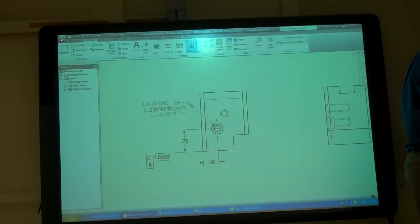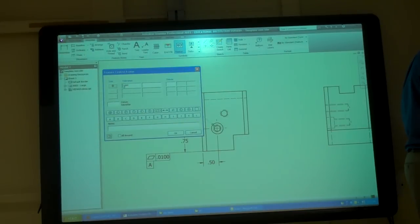For the hole, then I'll go to feature control frame. I'll just pick here, right click, continue, position, dial in .003, relative to datum A.